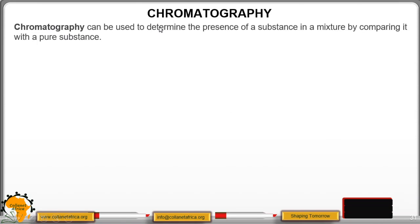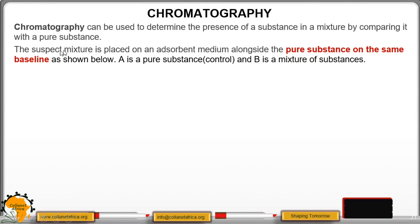Chromatography can be used to determine the presence of a substance in a mixture by comparing it with a pure substance. The suspect mixture is placed on an adsorbent material or medium alongside the pure substance on the same baseline, as shown below.